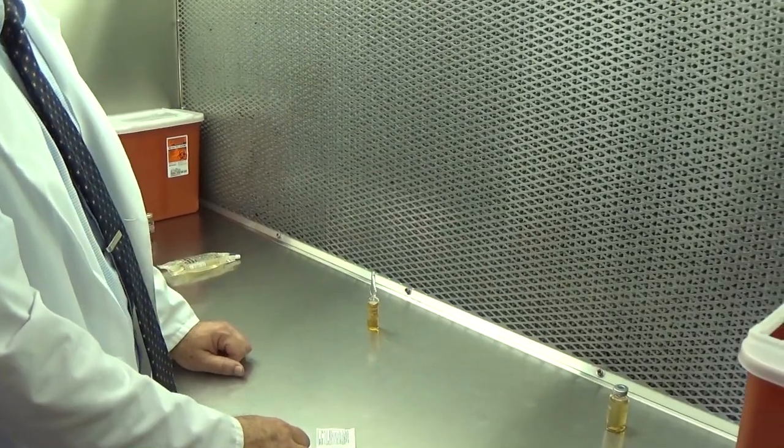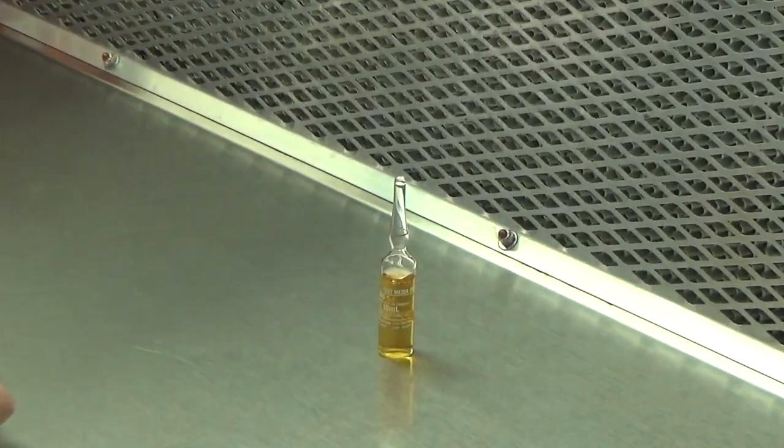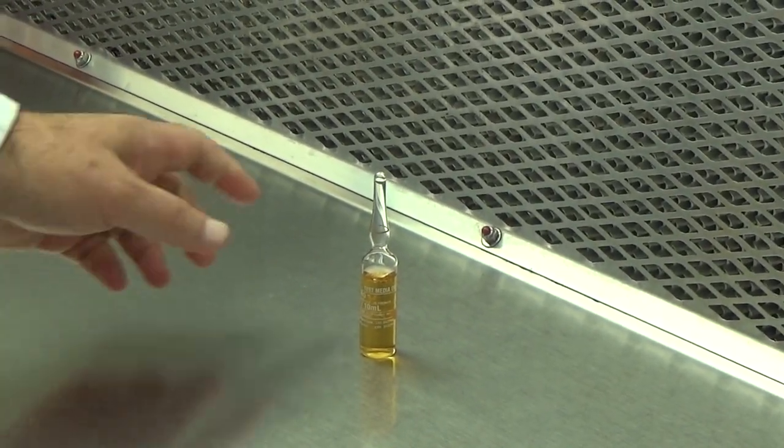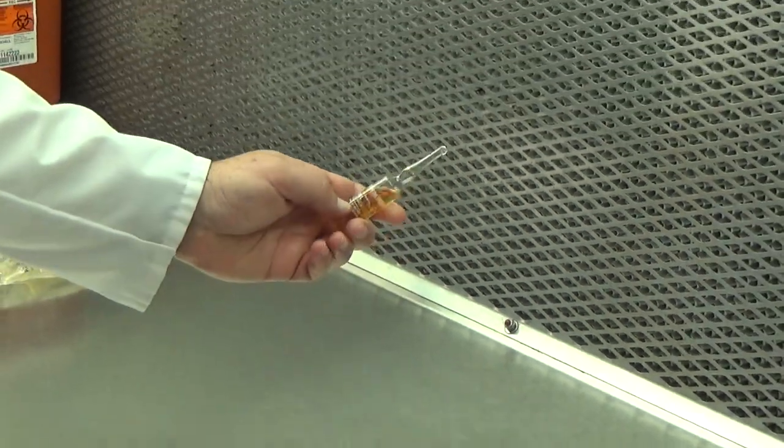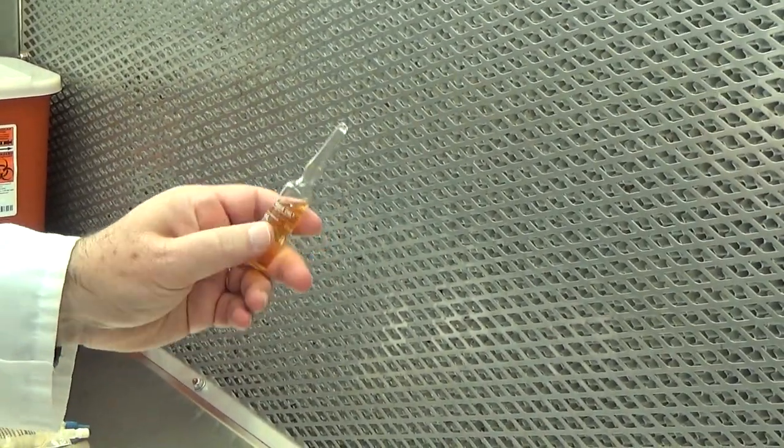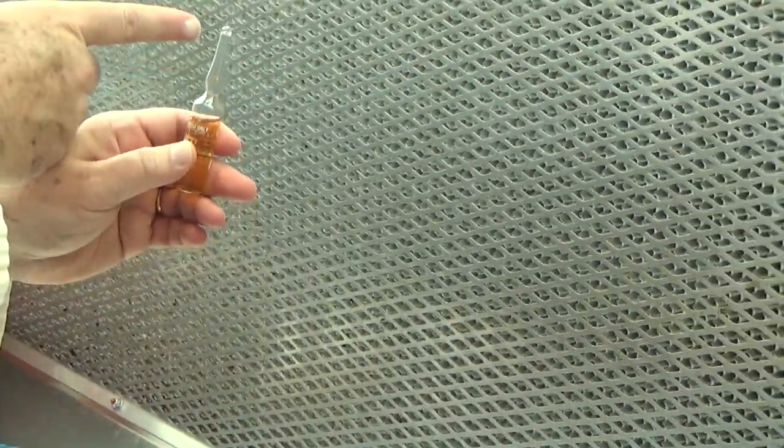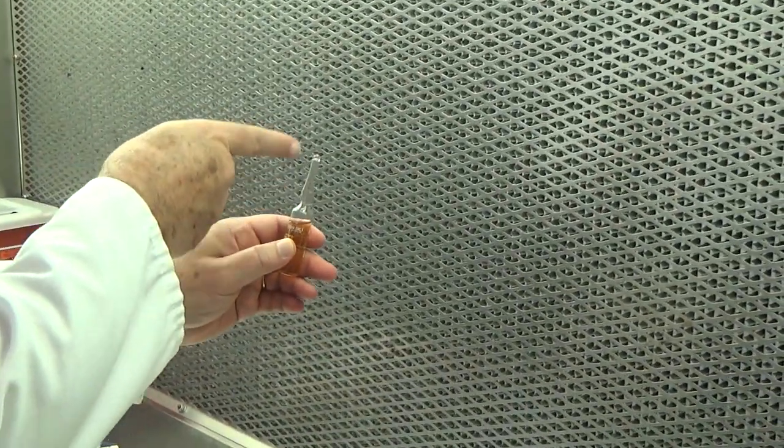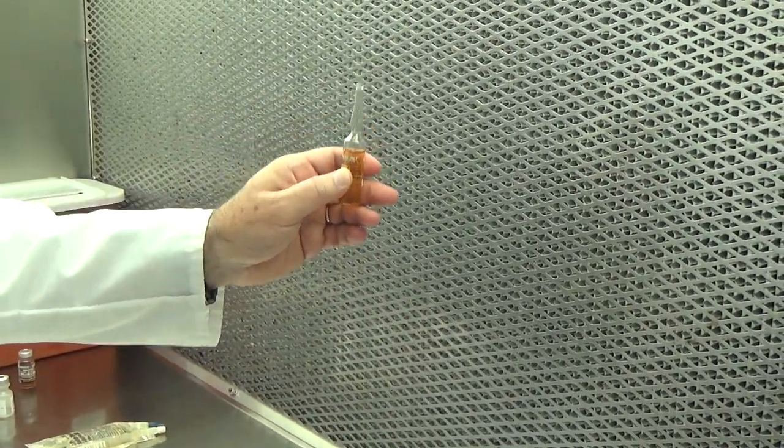Now I'm going to demonstrate the proper techniques for opening and transferring the contents of an ampule. The first step is the same as with any additive. I'm going to check the identity, strength, concentration, and expiration date. The second step is remove any residual drug from the neck of the ampule, which it's already gone.